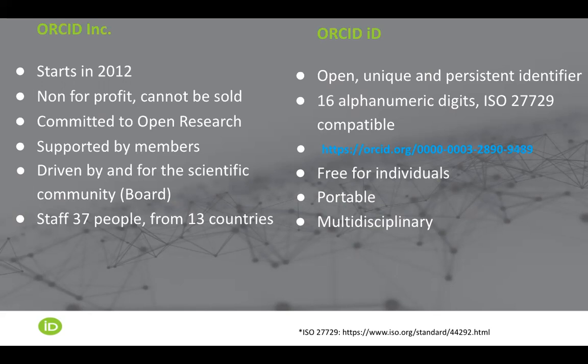The ORCID identifier is the solution proposed by ORCID to solve the name ambiguity problem. The ORCID ID is an open, unique and persistent identifier. It has 16 alphanumeric digits and is compliant with the ISO 27729 standard. It is presented as a URI — as a link. It's free for individuals. It's portable, meaning that the researcher can take their ORCID ID everywhere. The ORCID ID belongs to the researcher, and it is a multidisciplinary registry of all the activities of the researcher.